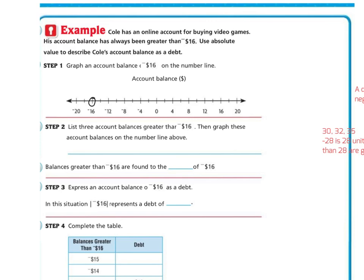List three account balances that are greater than negative 16. Well, you could say negative 15, negative 14, because we're going to go this way. Negative 8, 4. You could graph many, many numbers, but they all have to be to the right. So the balances greater than negative 16 are found to the right of negative 16.